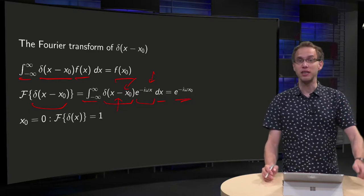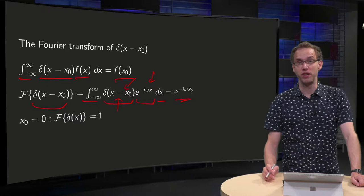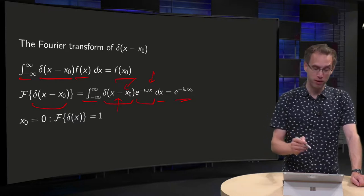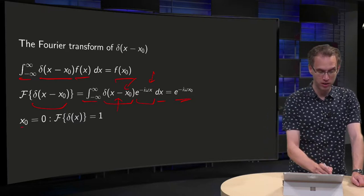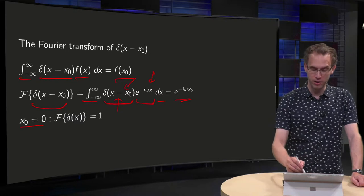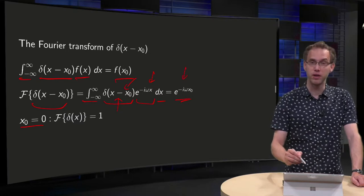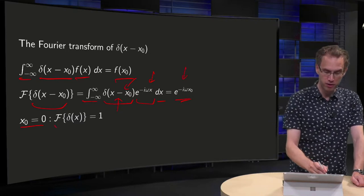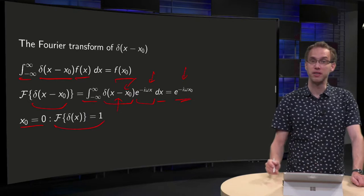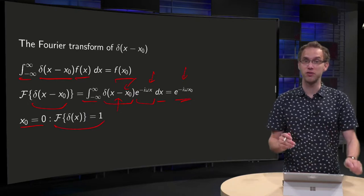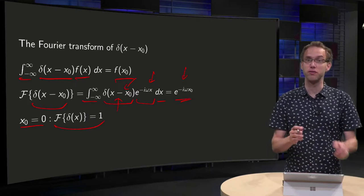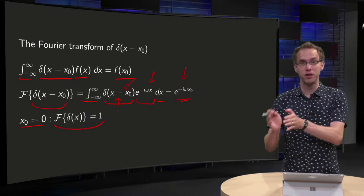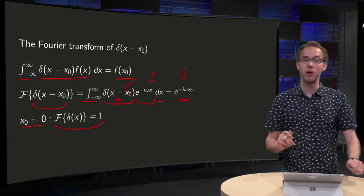That's the Fourier transform of the delta function, and it is really nice. For example, if you have x₀ equals zero, then you get e to the power of zero, and the Fourier transform of the delta function δ(x) with x₀ equals zero is just the function one. So the Fourier transform of the delta function becomes one.